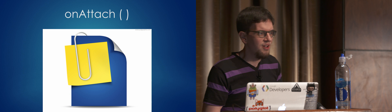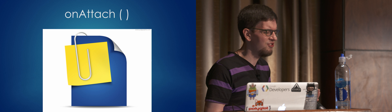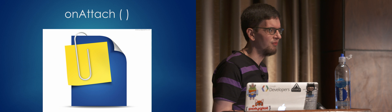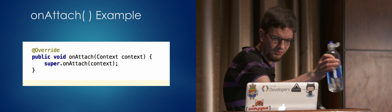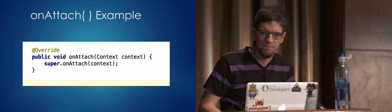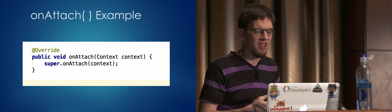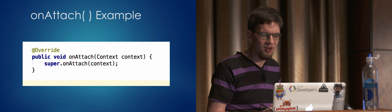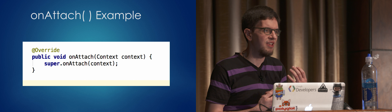The first of those lifecycle methods is onAttach. onAttach is called by the managing activity when a fragment is first attached, yet is not really interactable — not much is done here. onAttach is where you can begin to use the context; however, it's not advised as it may be null. For any fragment's context to interact with the activity, you use getActivity.